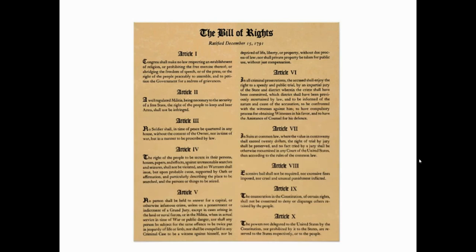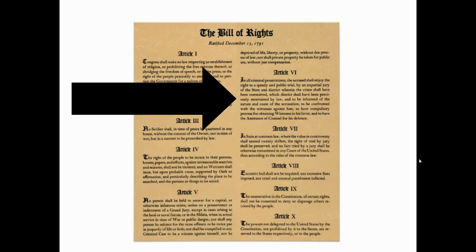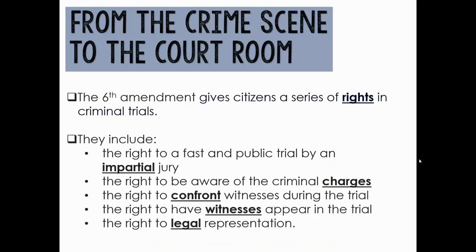You might be thinking, what in the world does this have to do with forensics? There are 10 articles that make up the Bill of Rights, and Article 6 is the one we're going to focus on. Article 6, or the Sixth Amendment, gives citizens the right to a fair and speedy trial by an impartial jury.